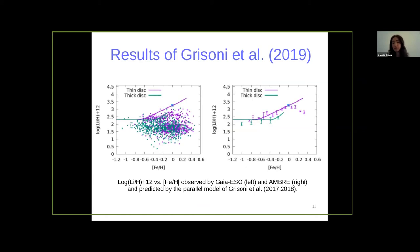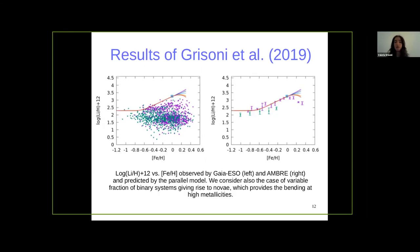The thick disk is shifted to lower iron metallicities in agreement with the data. For the thin disk, we have the plateau, the rise, and we match the meteorite value, but then our model continues to rise — at variance with the data that appears to decline. To explain this decline, we propose a novel explanation: if novae are the main lithium producers in the galaxy, what happens if the fraction of binary systems giving rise to novae declines with metallicity? We tested this hypothesis and could get a flattening of the curve at high metallicity, proposing a novel explanation for the lithium decline at high metallicities.